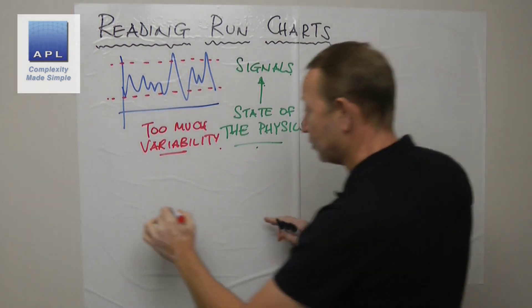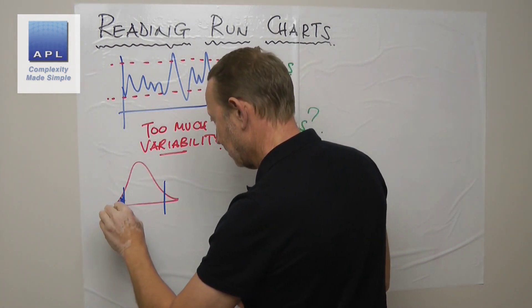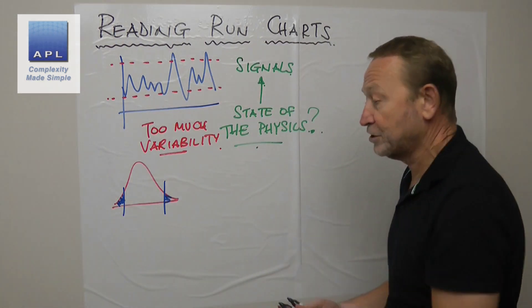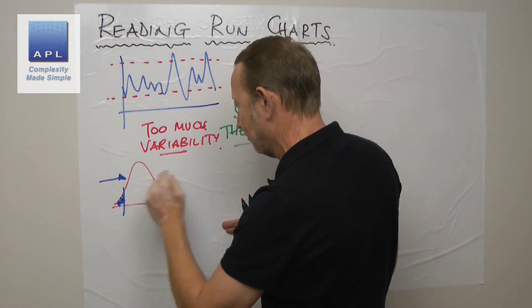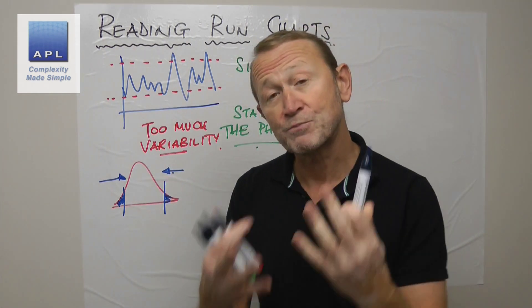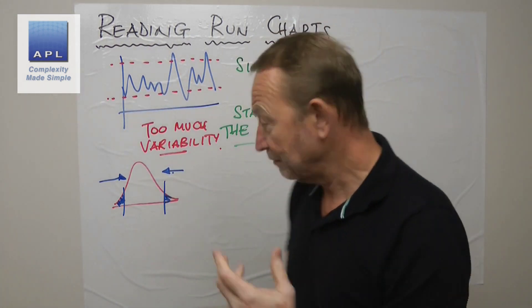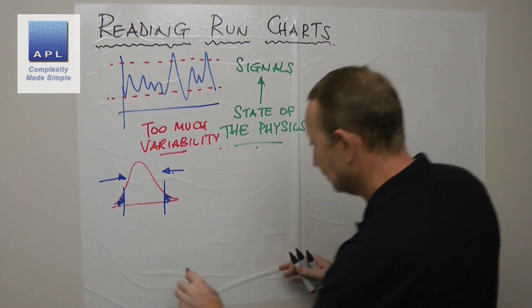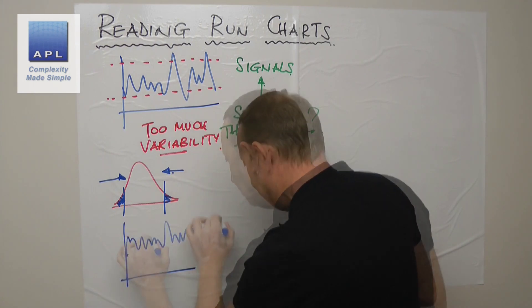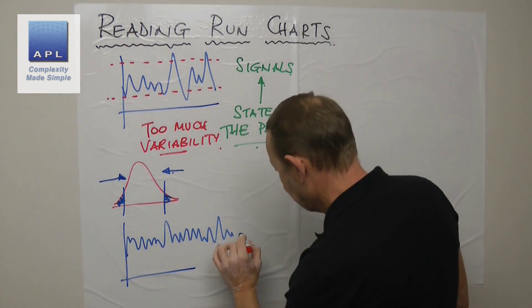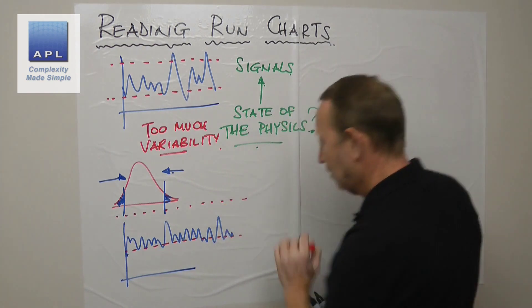Now what does that mean? It means that if I drew the capability diagram, I've got defects at the lower end, I've got defects at the higher end. What physics have I got to transform? I've got to squeeze that variability in. That means process control. So there's a symptom. How about a different graph then?